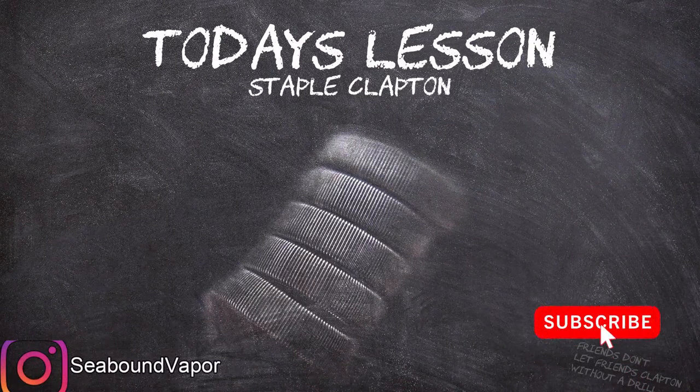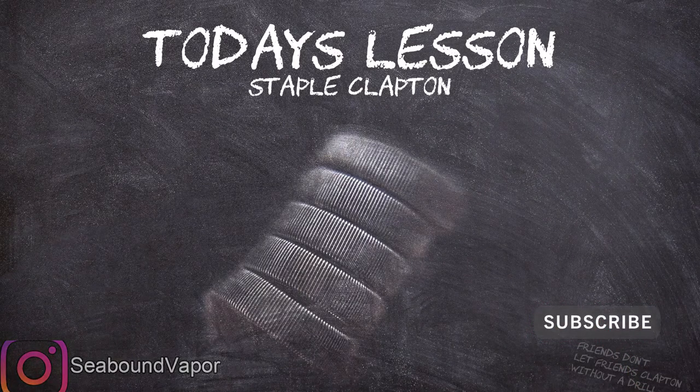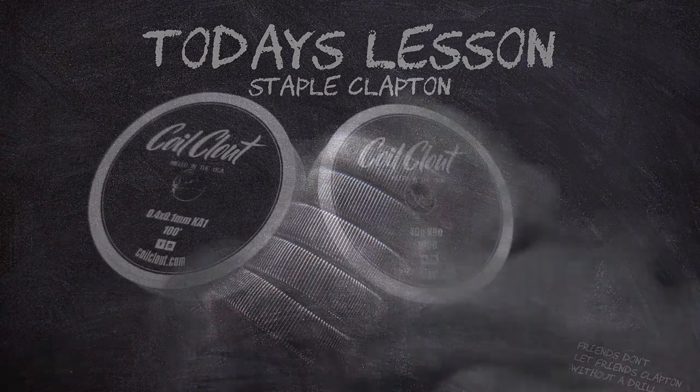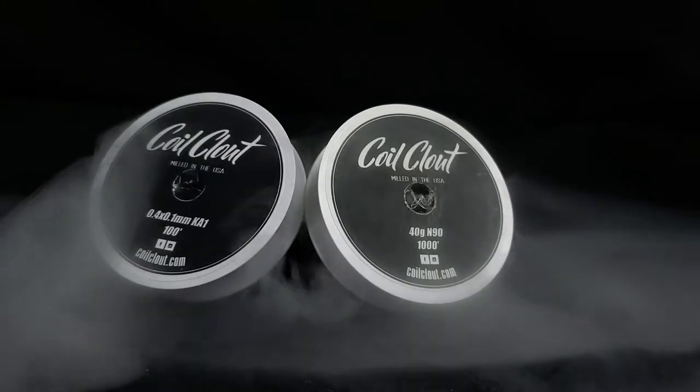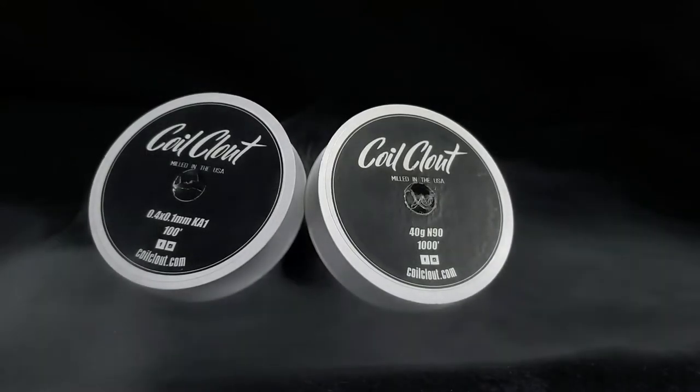Hi, I'm Wave from Seabound Vapor and today we'll be looking at the staple coil. There's a handful of things we'll be looking at, so first we'll go over what we need. For this coil I'm going to be using 0.4 ribbon wire and 40 gauge for the fuse.